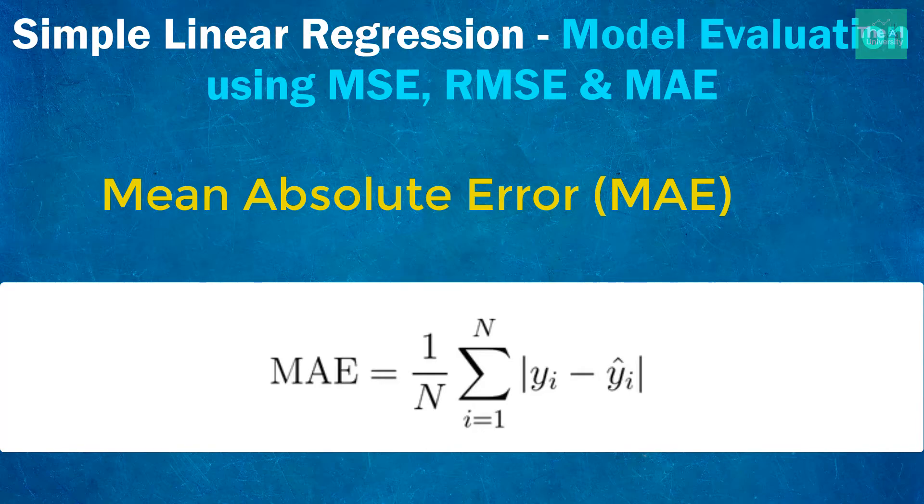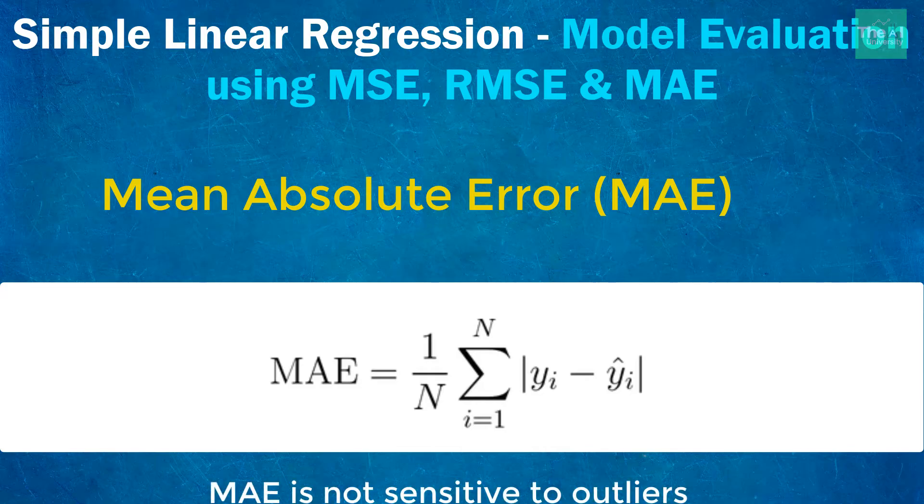For example, the difference between 30 and 0 will be thrice the difference between 10 and 0. However, same is not true for RMSE. Please note that this metric is not that much sensitive to outliers as mean square error is.